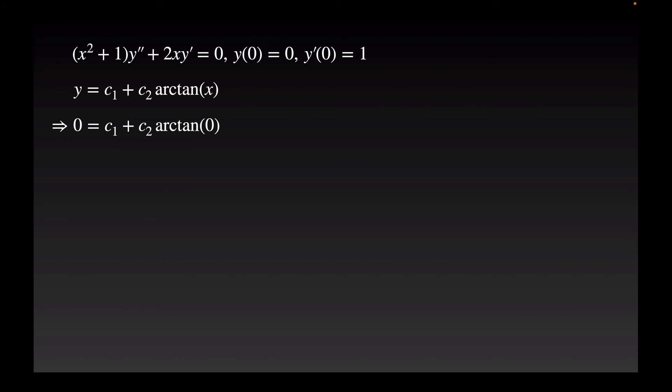And I can use my initial conditions to solve for c1 and c2. So 0 equals c1 plus c2 arc tan of 0, and arc tan of 0 is 0, so c1 is equal to 0.